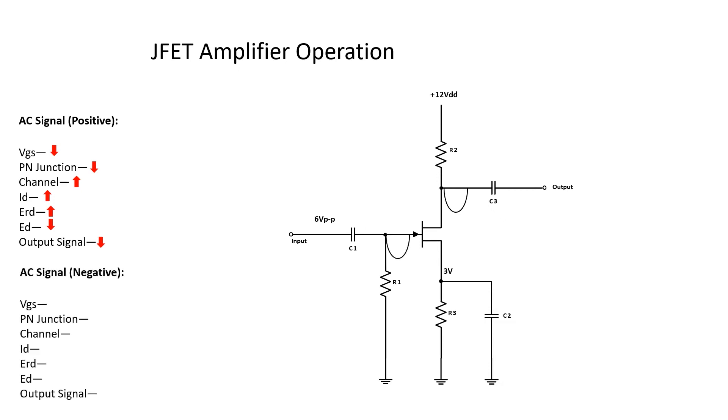But what goes up must come down. When that AC signal alternates negative, now we're getting further away from that three volts on the source. So we're increasing reverse bias in VGS, which means that PN junction is getting bigger and squeezing down on that channel, which means the channel's getting smaller. Smaller channel means there's less current that can flow. So we have less drain current. Less drain current through our drain resistor R2 means that its voltage drop is going to decrease, leaving more voltage on the drain. And since the output's taken from the drain, we develop that positive alternation.